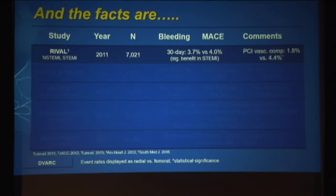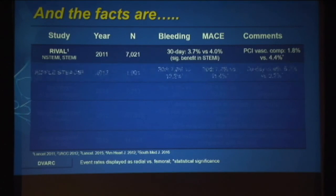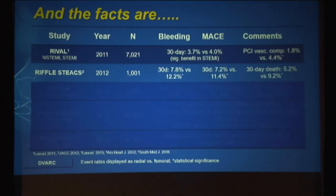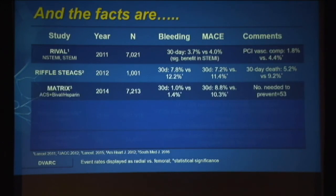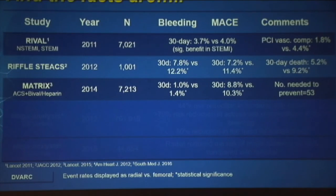Here are the facts in greater detail. The RIVAL study had 7,000 patients. The overall study was negative; however, there was a significant benefit for radial in the STEMI population, and overall vascular complication rates were small. RIVAL STAS, with 1,000 patients, showed significantly lower risk of bleeding and lower risk of major adverse cardiovascular events for radial. The MATRIX trial in 2014, 7,000 patients, testing combinations of blood thinners versus radial and femoral PCI, again showed similar trends.